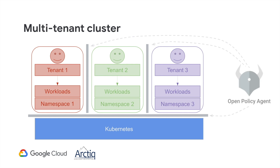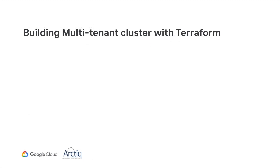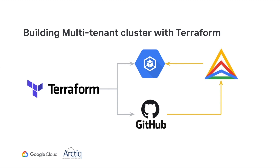In this demo, we will use Open Policy Agent to automate policy enforcement. There are three main steps for this automated workflow. First, Terraform creates a Google Kubernetes Engine cluster and a GitHub repository which contains the baseline policies configuration. Second, ACM is deployed to the cluster and is configured to use the GitHub repository as the desired state of the cluster. Lastly, ACM pulls the configuration from the GitHub repository and pushes them to the cluster.